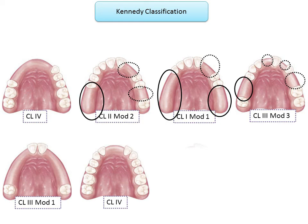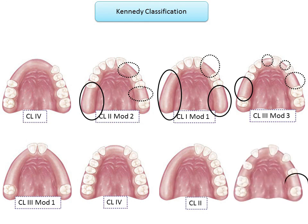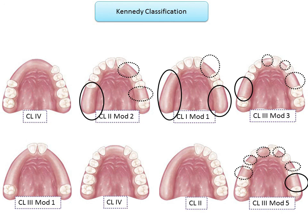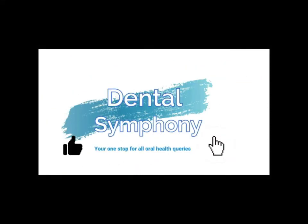If the edentulous space has all teeth present posterior to it, it is automatically Class 4. A single edentulous space in the posterior region gives Class 2. With six edentulous spaces, the most posterior one determines the classification — teeth present anterior and posterior make it Class 3 — and the five remaining edentulous spaces act as modifications: Class 3 Modification 5. This concludes Kennedy's classification, Applegate's rules, and Physit's additions. Other classifications will be discussed in a separate presentation.